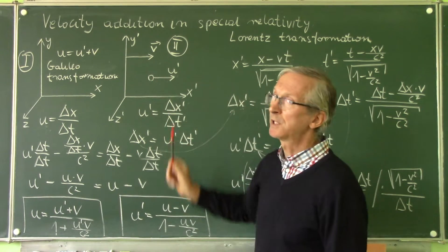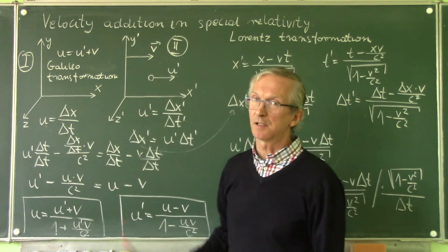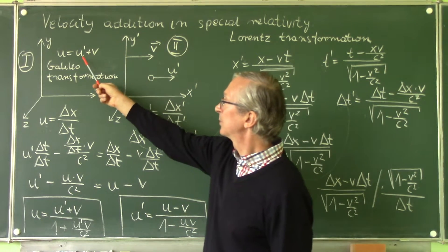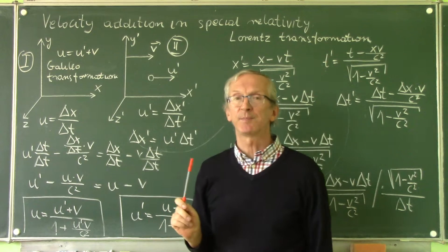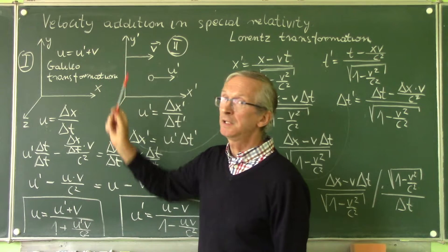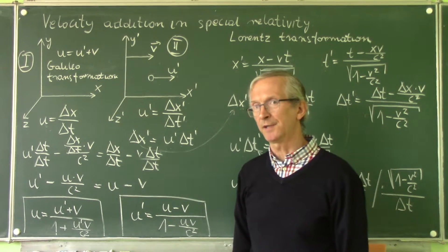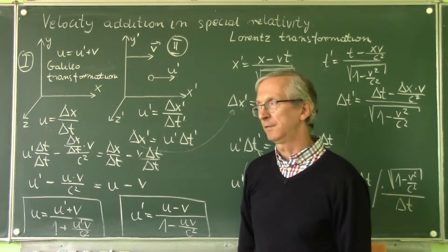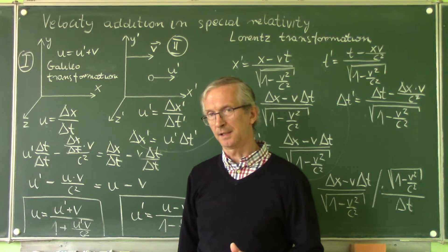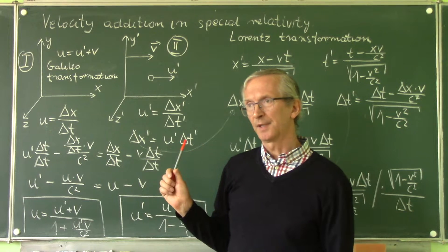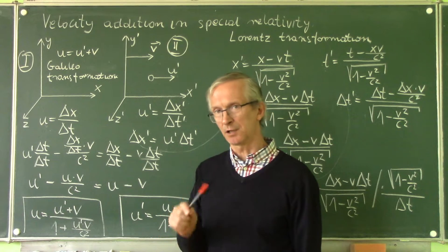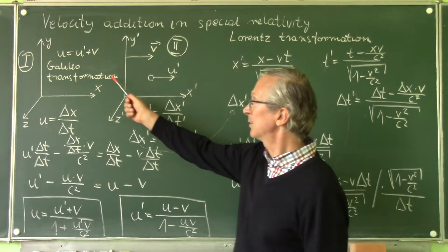Let us assume that this object is just light and the velocity of light in the vacuum is just c. So if we put here c, then the speed of light measured in the first frame of reference would be c plus V. It would be greater than the speed of light in the vacuum. And we know that nothing can move faster than light in the vacuum, and the speed of light in all inertial frames of reference is the same and equals c. So we can't use this transformation.